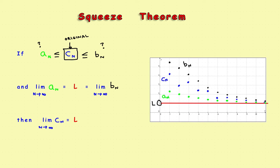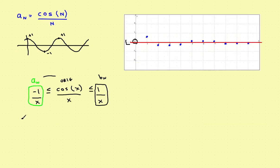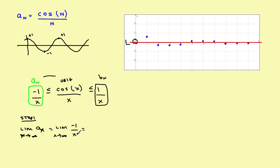Step one: find the limit of a_n as x approaches infinity. That's the limit of -1/x as x approaches infinity. As x gets bigger and bigger, this entire term goes to zero. So the limit of a_n as n approaches infinity equals zero.